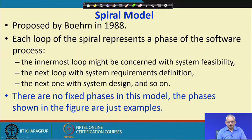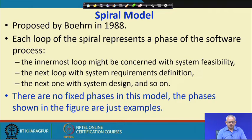Now let us look at the Spiral Model, which is a rather old model compared to the ones we just saw. It was proposed by Boehm in 1988 and has features of both incremental and evolutionary development. It is developed over several loops, similar to increments. The innermost loop may be concerned with system feasibility, the next with requirement definition, the next with system design, and so on.